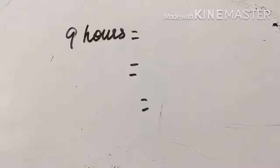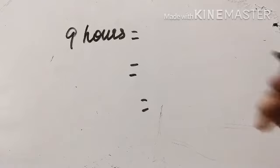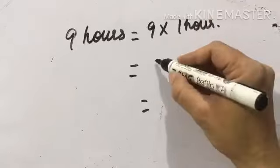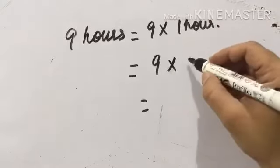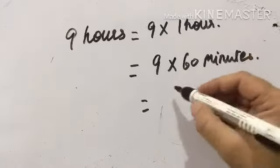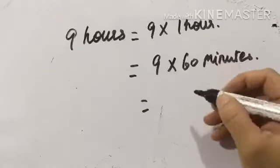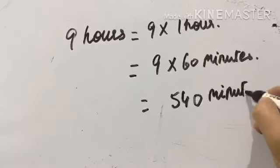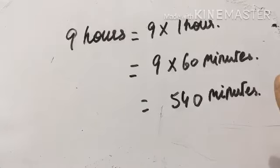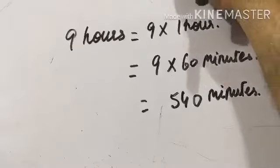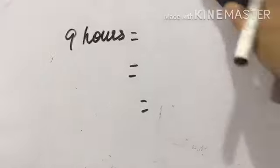The next one: nine hours to be converted into minutes. Nine hours is nine into one hour, and nine into 60 minutes. Nine zeros are zero and nine sixes are fifty-four, so that gives us 540 minutes. The answer is 540 minutes.